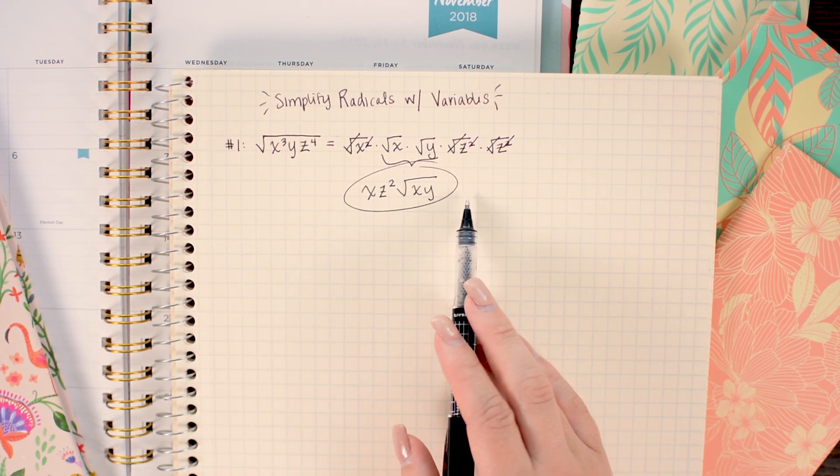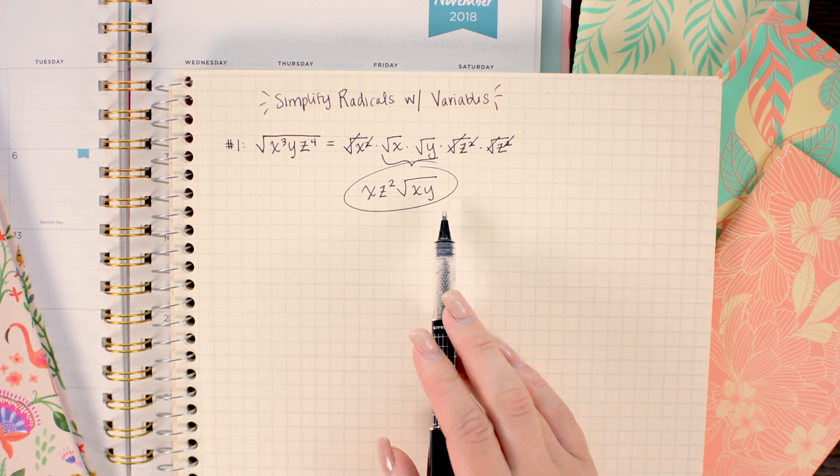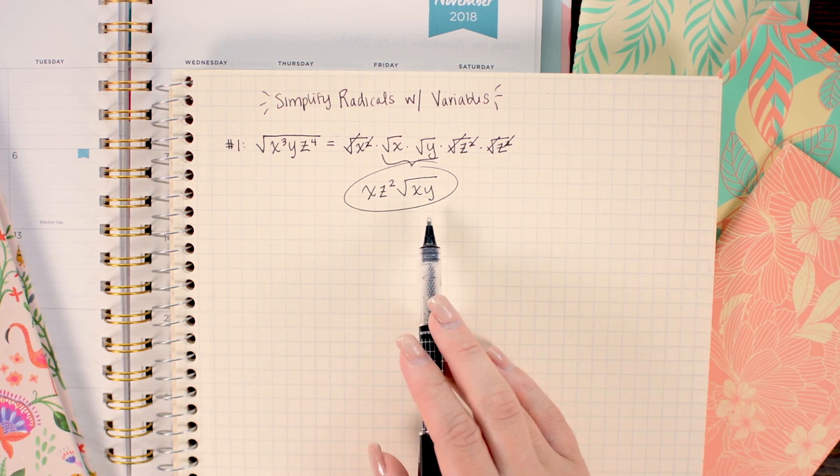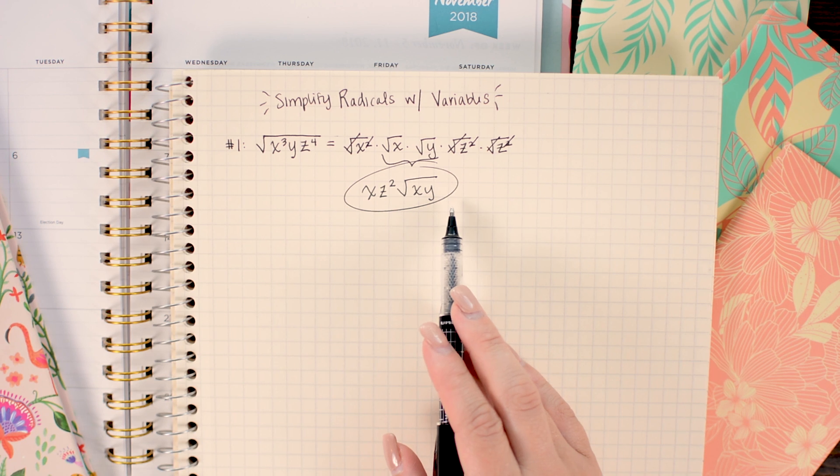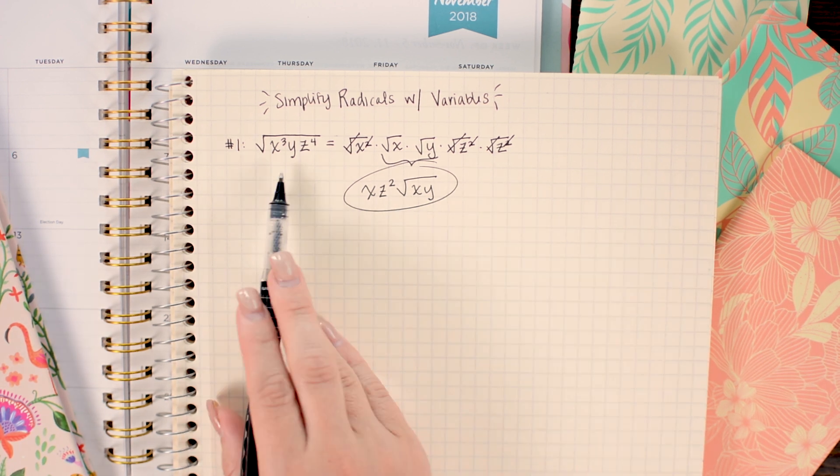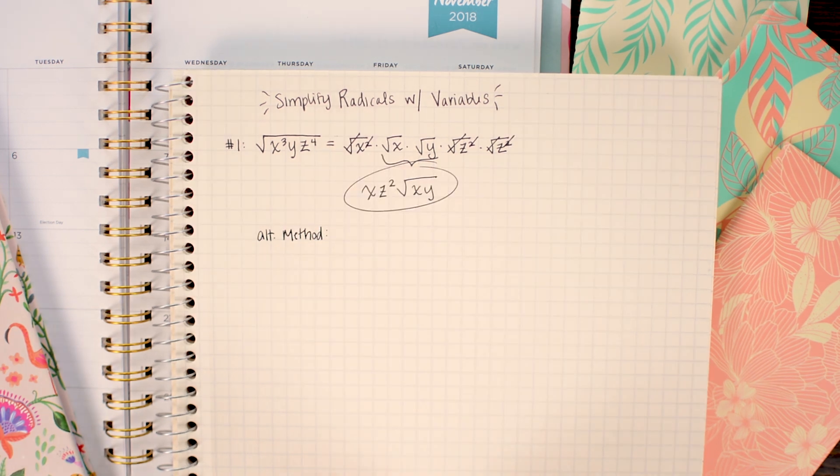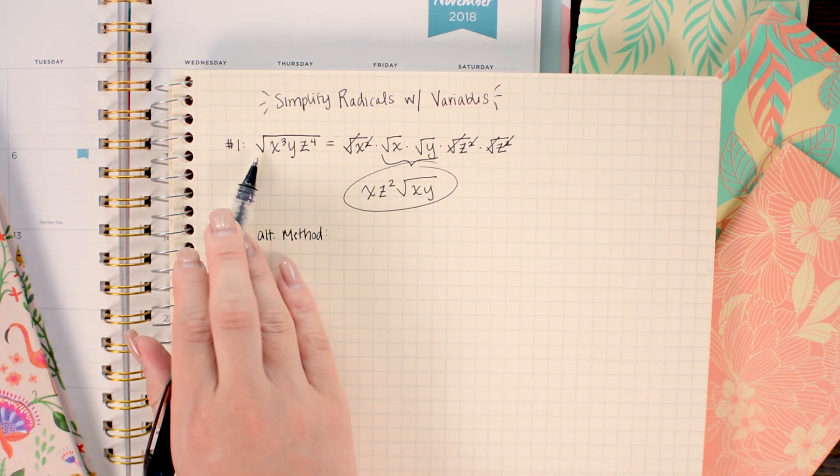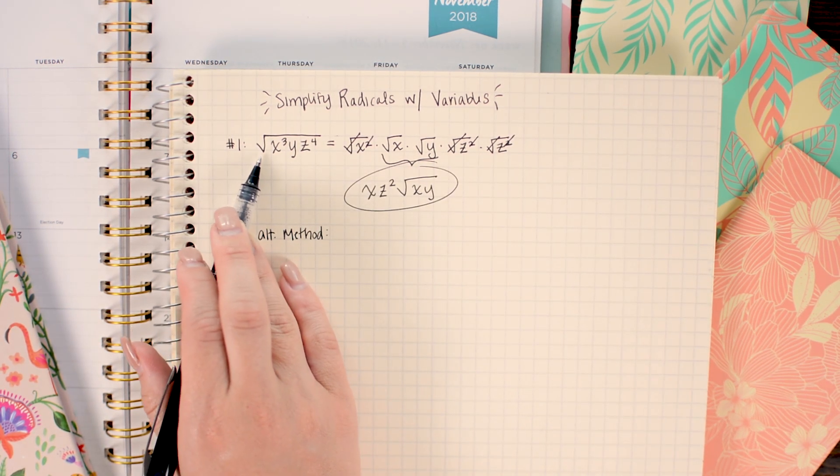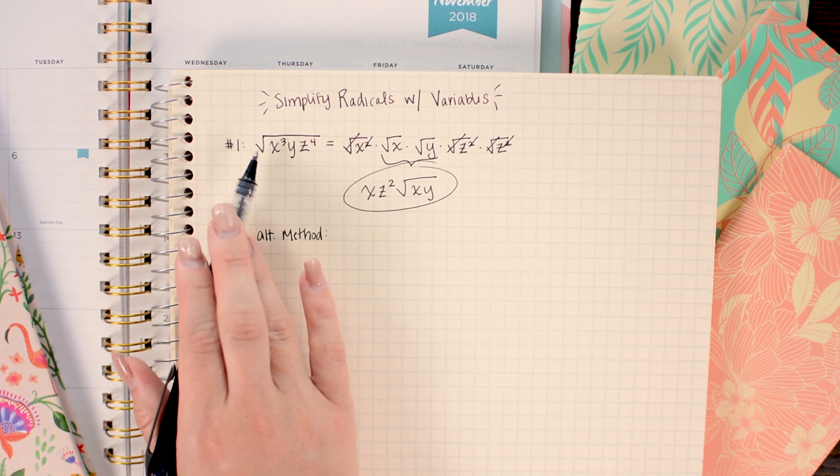I think that's probably the easiest way to do it but I'm going to show you how to use fractional exponents as well because in some scenarios that might end up being easier or you might just prefer it more. So I'm gonna do the same problem with the alternate method. In this method we're going to get rid of the square root immediately and replace it with a power of one-half.